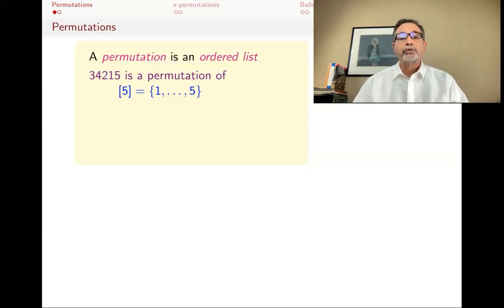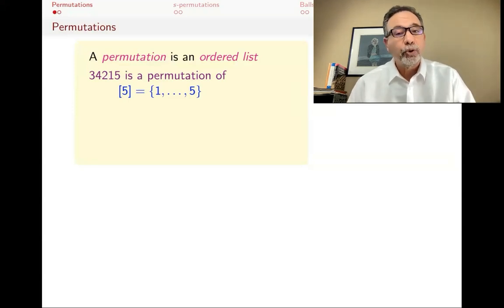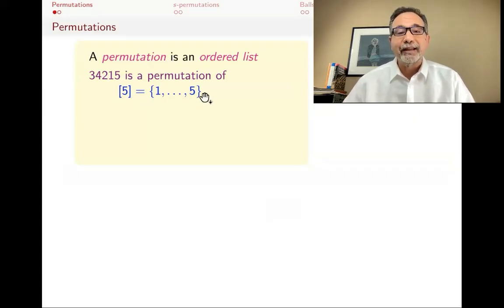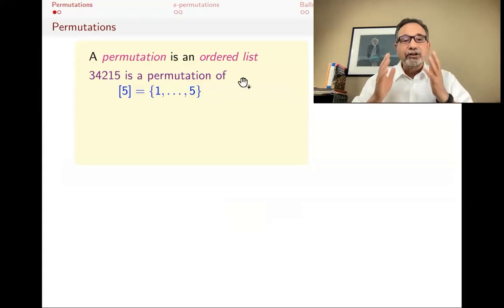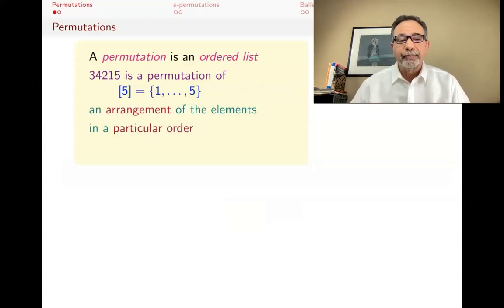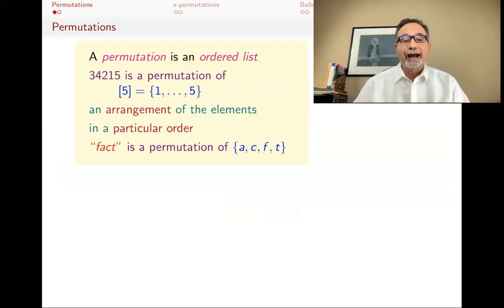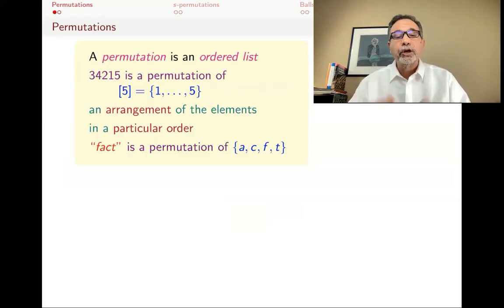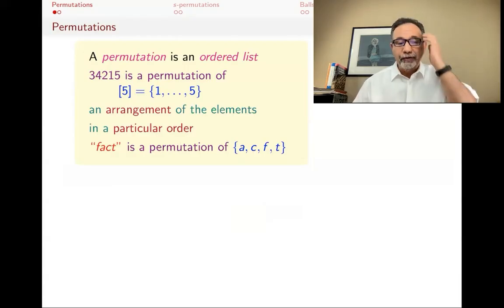34,215 is very different than 24,315. Bracket N is always going to be the set with N elements — our prototypical set of N elements. A permutation is an arrangement of elements in a particular order. For example, the word 'fact' is a permutation of the letters A, C, F, T. When you write a word, just like when you write a number, order matters — what order you write the letters makes a difference.